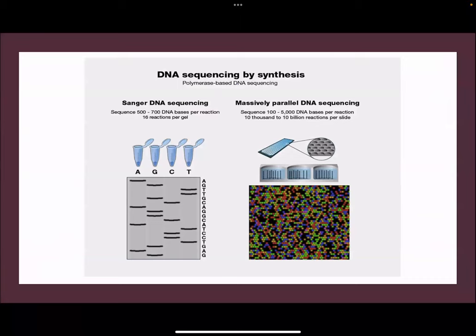Advances in sequencing technology have transformed genomic testing. Previously, only limited genes could be analyzed at a slow rate. Now, with automation and improved technology, next generation sequencing — also called massively parallel DNA sequencing — splits the whole genome into multiple small components, sequences each simultaneously in individual wells, then aligns them back together by comparison to a reference genome. This enables analysis of many genes at once.